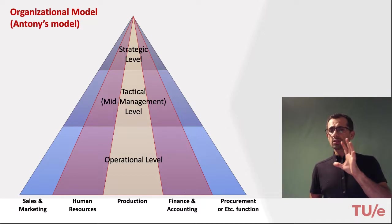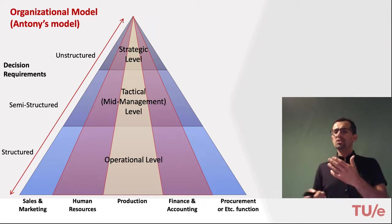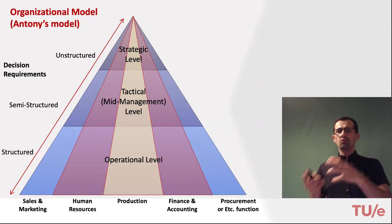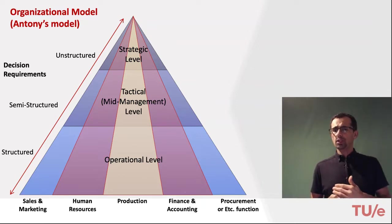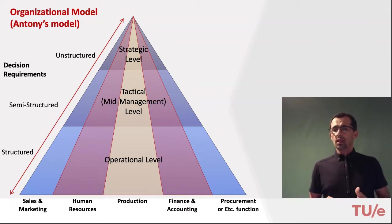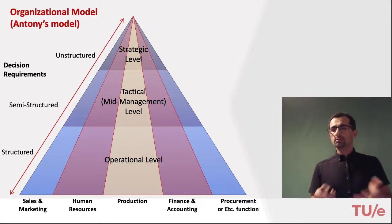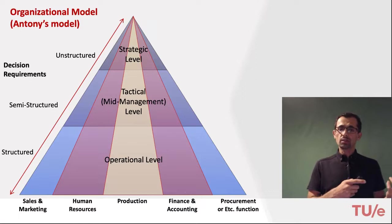When considering these levels from the perspective of decision requirements, decisions become much more structured as we move from the strategic to the operational level. For example, at the strategic level a decision might be: 'Shall we produce electric bikes?' At the operational level, a decision would be: 'What should be the best replenishment level for item XYZ?' The second is far more structured and can be precisely calculated.